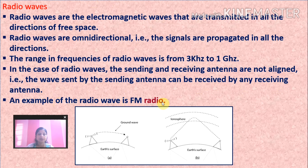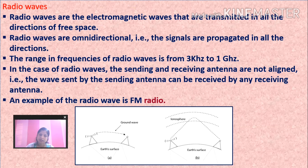FM radio — like 92.7 Big FM — transmits programs through radio wave frequencies ranging from 3 kHz to 1 GHz, and the signals can travel in any direction.